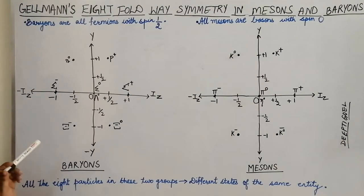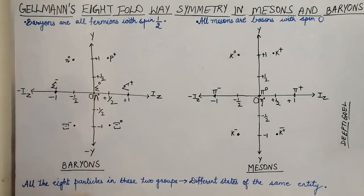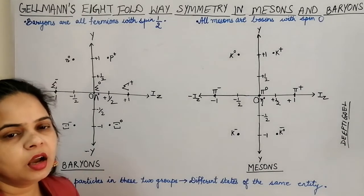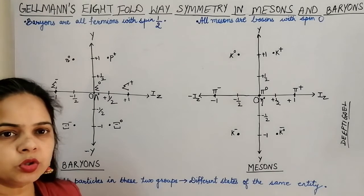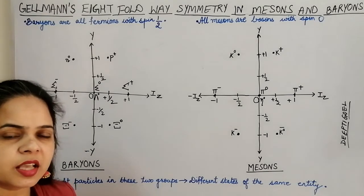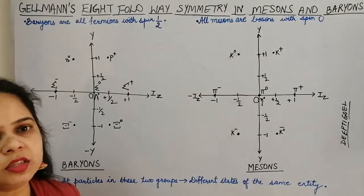Gell-Mann proposed that all the baryons are fermions. Fermions are the particles which have spin that is a half-integral of h-cross by 2π, or the spin quantum number is one-half. Whereas the mesons are particles which may be considered as bosons — they obey Bose-Einstein characteristics and have integral spins or spin 0.